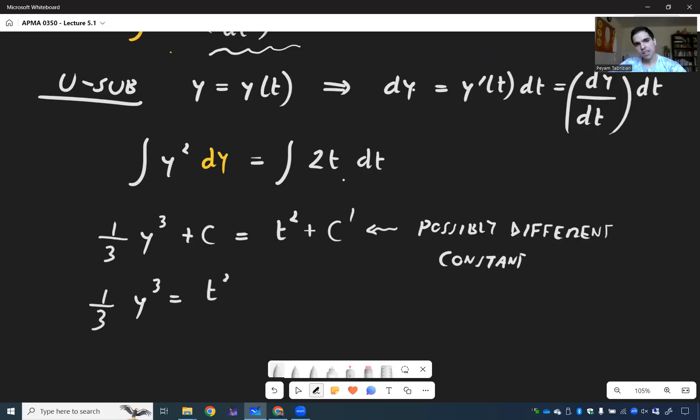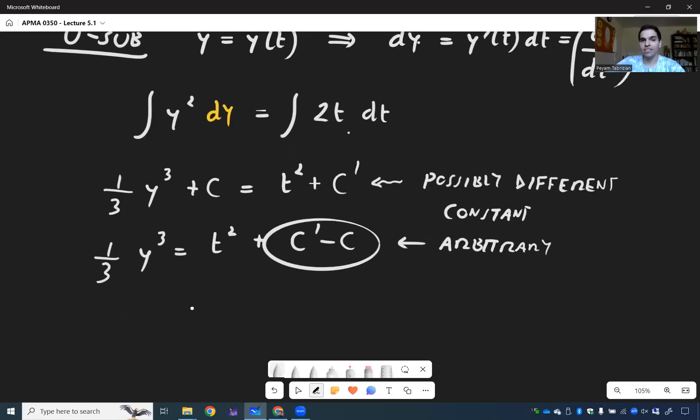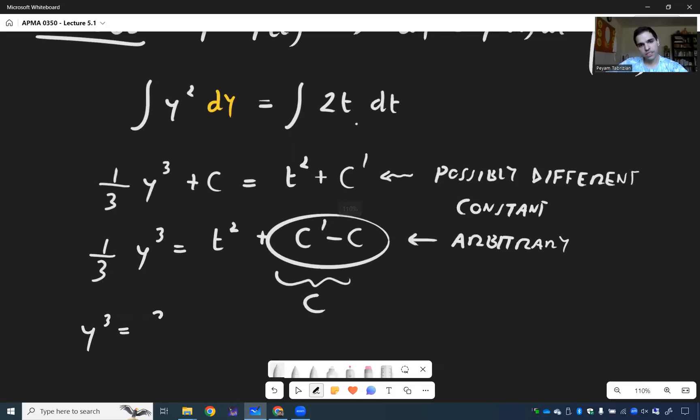And then we can rearrange because we want to solve for y. So one third y cubed equals t squared plus c prime minus c. But here's the thing, this c prime minus c, that is an arbitrary constant. So just like we've done before, we just rewrite this as c.